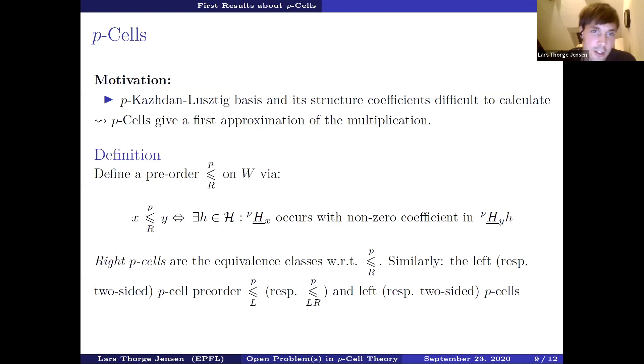So what are cells? In order to define them, we define a pre-order, which I'll denote by p right small or equal on my indexing set of the basis on my group W. I say that x is p right small or equal than y if the p-Kazhdan-Lusztig basis element corresponding to x occurs with a non-zero coefficient in a product where I take the p-Kazhdan-Lusztig basis element corresponding to y and multiply it on the right by any element of the Hecke algebra and express this again in the p-Kazhdan-Lusztig basis. Then the right p-cells are actually the equivalence classes with respect to this pre-order. Similarly, left cells, I can just allow multiplication on the left or two-sided cells, I allow multiplication on both sides. This is a straightforward generalization of the notion of Kazhdan-Lusztig cells. Kazhdan-Lusztig cells is a very rich theory where there have probably been over hundreds of papers just published on this topic.